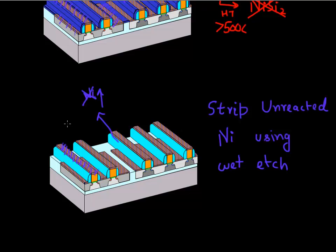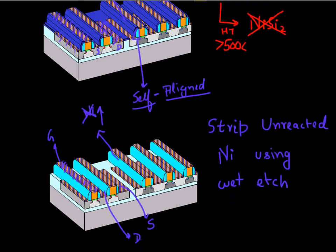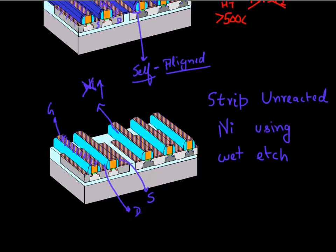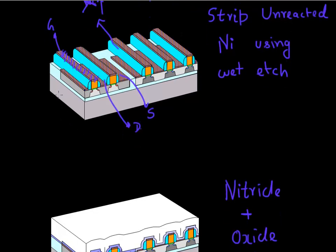You now have nickel silicide on top of your gate, on top of your source, and on top of your drain. Using this spacer, you obtain self-alignment: the spacer helped form nickel silicide on the source, drain, and gate without shorting them. That's why it's called a self-aligned process flow. So the spacer not only helps in the implants for the source drain extension, but also helps in this silicide formation.